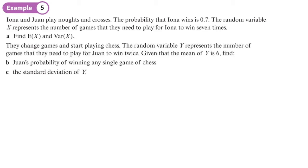Iona and Juan play noughts and crosses. The probability that Iona wins is 0.7. The random variable X represents the number of games they need to play for Iona to win seven times. Find E(X) and Var(X).